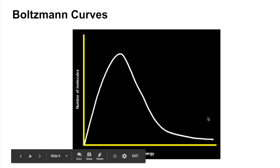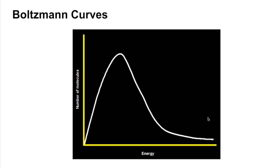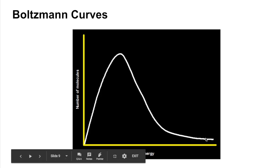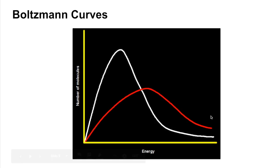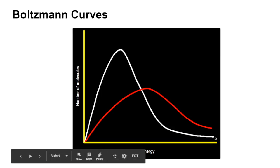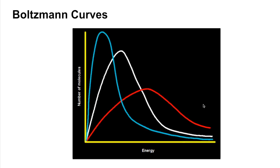Now we'll look at how the profile of the curve changes when we increase or decrease the temperature. Think of it as a piece of wire: if you increase the temperature, you're raising the energy of everything, so you pull the wire to the right toward higher energy and the shape of the curve changes accordingly. If you lower the temperature, you're lowering the energy of everything, so you push the wire to the left.